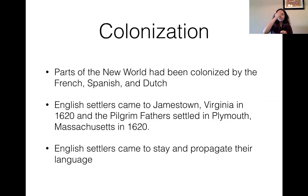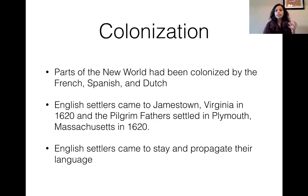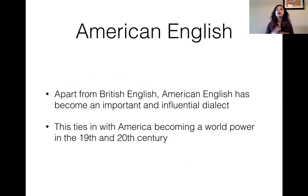The British people who came to America encountered previous settlers — the French, Spanish, and Dutch. When the English people came, they first came to Jamestown, Virginia, and the Pilgrim Fathers settled in Plymouth, Massachusetts in 1620. Unlike the French, Spanish, and Dutch, the English settlers came to stay and wanted to propagate their language. We could imagine that if not for the English, we would be speaking Spanish or French right now. The English settlers really wanted Americans to speak English, and so this is the birth of American English — the period when we start to see the dialect of American English that's very different from British English, tying in with America becoming one of the leading world powers in the 18th through 20th centuries.